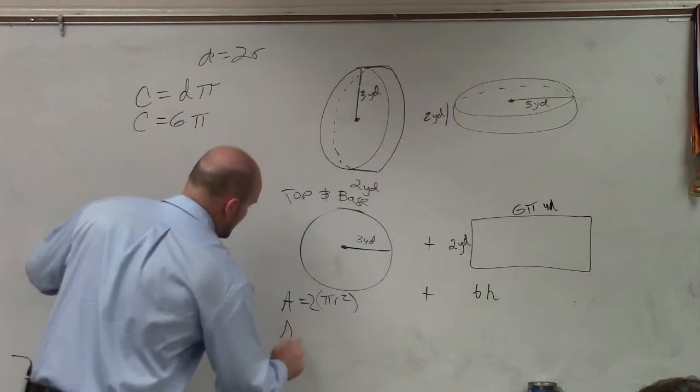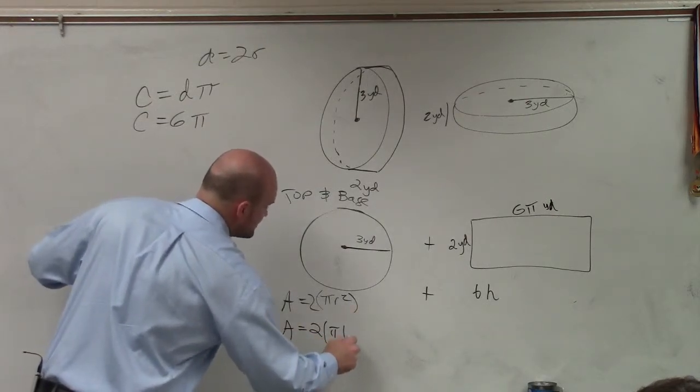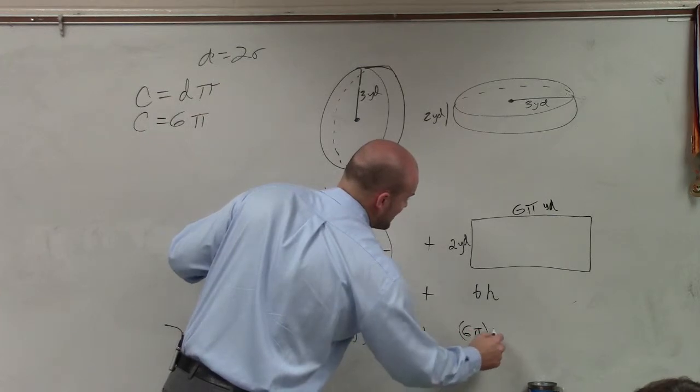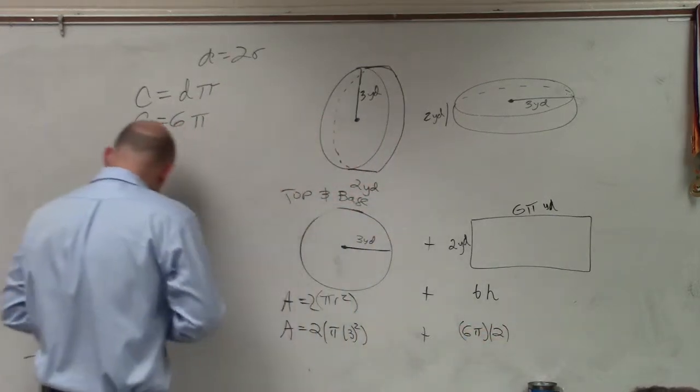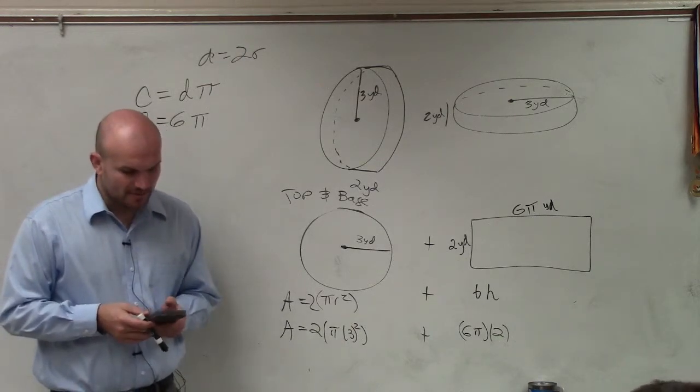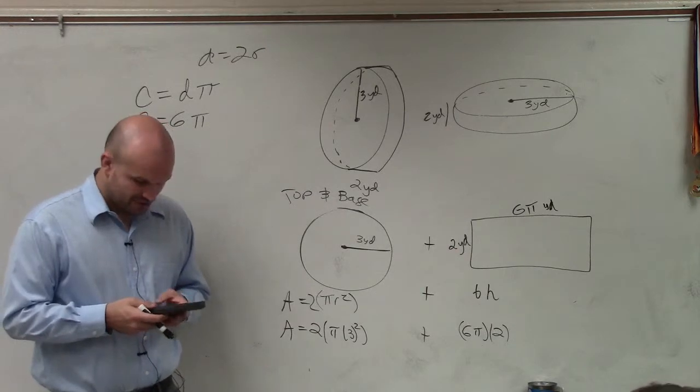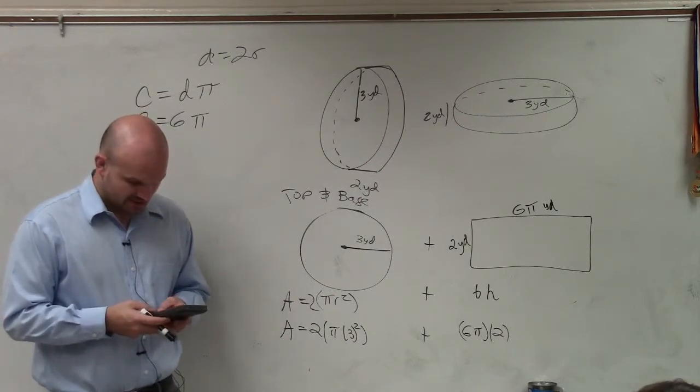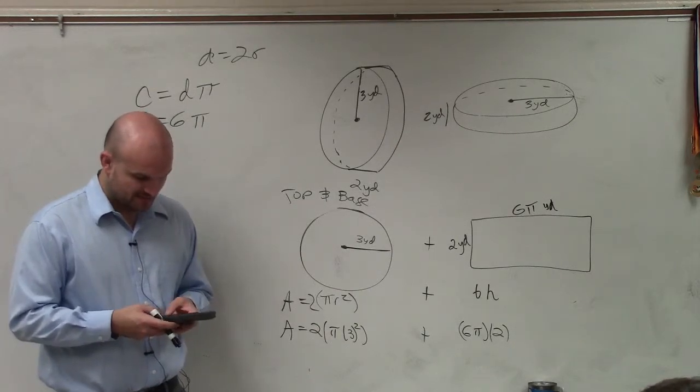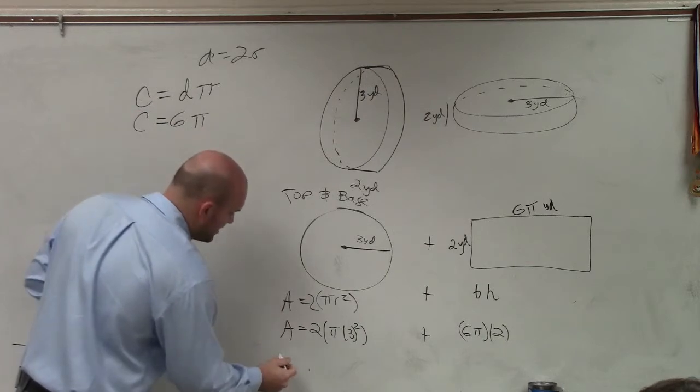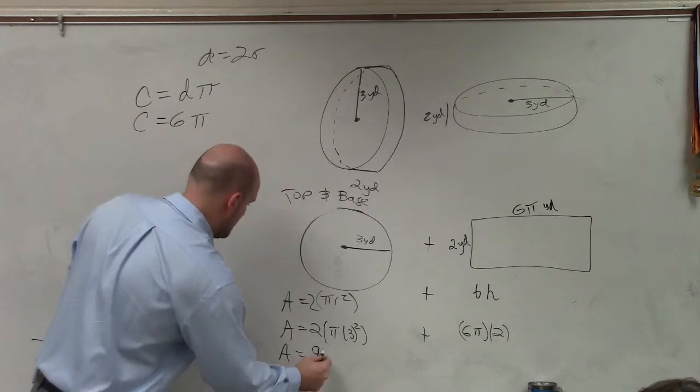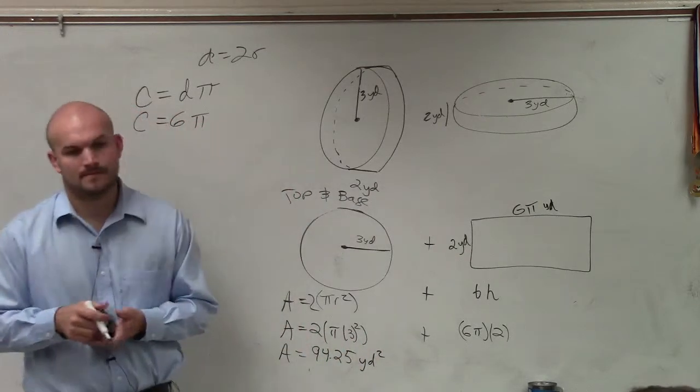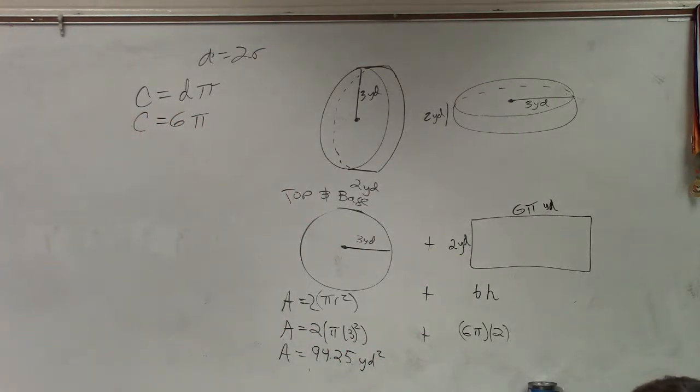So now let's just plug in what we know. Area equals 2 times π times radius squared, which is 3 squared, plus base times height. My base is 6π times 2. So now I just take my lovely calculator. And I'm going to add these up all together in my calculator. So I'll have 2 times π times 3 squared, plus 6 times π times 2. And my final area, answer for my area, equals 94.25 when I round it to the hundredth. And that is going to be yards squared. Anybody have any questions on that?